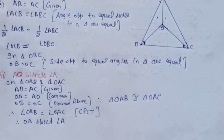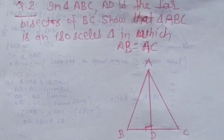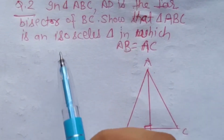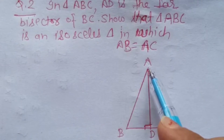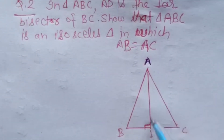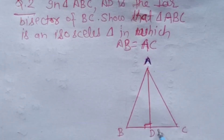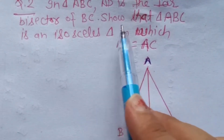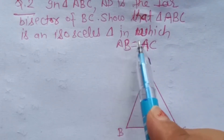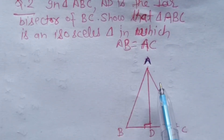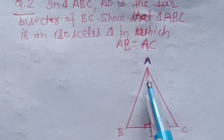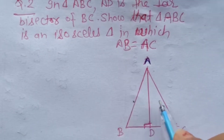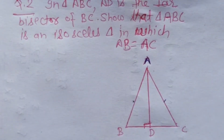Yeh tha hamara first question. Ab hum karte hain second question. Hamara question number 2 hai: In triangle ABC, AD is the perpendicular bisector of BC. Yeh triangle hai hamara ABC. Iske andar jo hamara AD diya rakha hai, woh perpendicular bisector hoga BC ka, means yeh angle 90 degree ka banega. Show that triangle ABC is an isosceles triangle in which AB equal to AC.